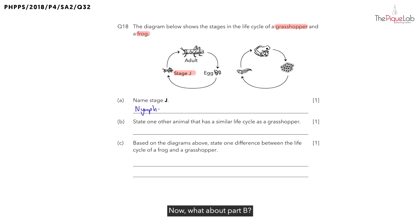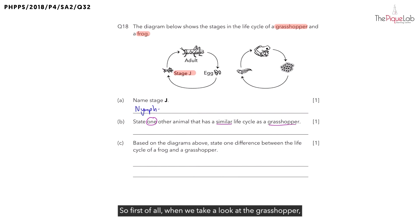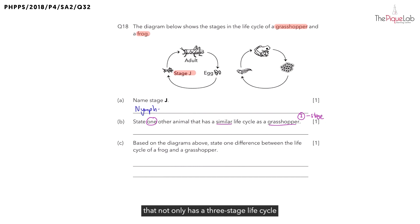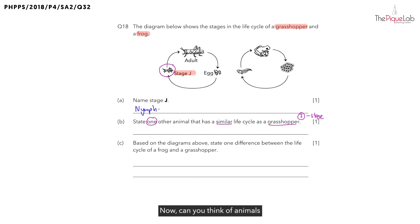Now, what about part B? They want us to state one other animal that has a similar life cycle as the grasshopper. When we take a look at the grasshopper, we can count that it has a total of three stages in its life cycle. We must look for an animal that not only has a three-stage life cycle, but whose young also resembles the adult. One very good example would be the cockroach.